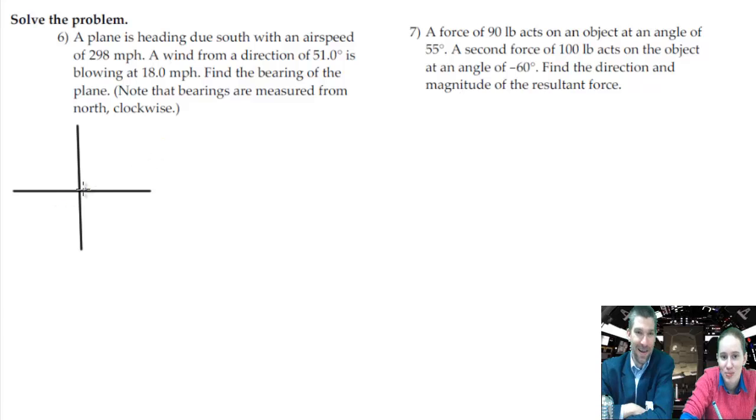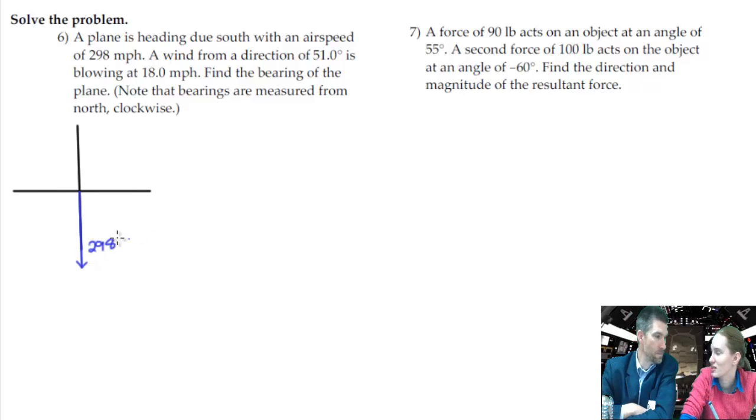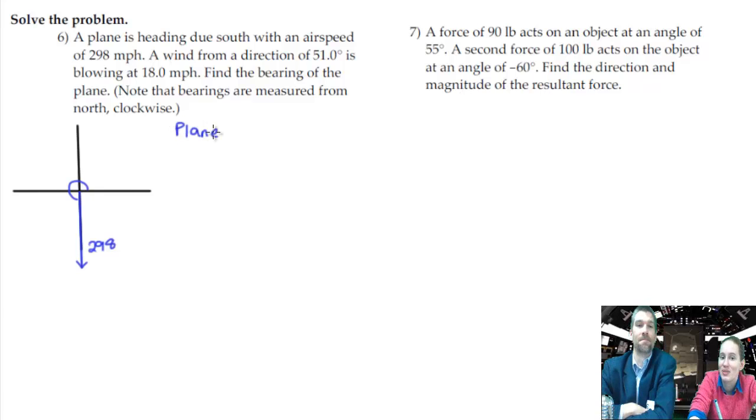Okay, so the airplane is due south, so that's along this line due south at 298 miles per hour. That's a magnitude. And the due south is telling us our direction, which we could figure out what that direction angle is just by coming around like this and saying, ta-da, that's 270, three pi over two, either way.